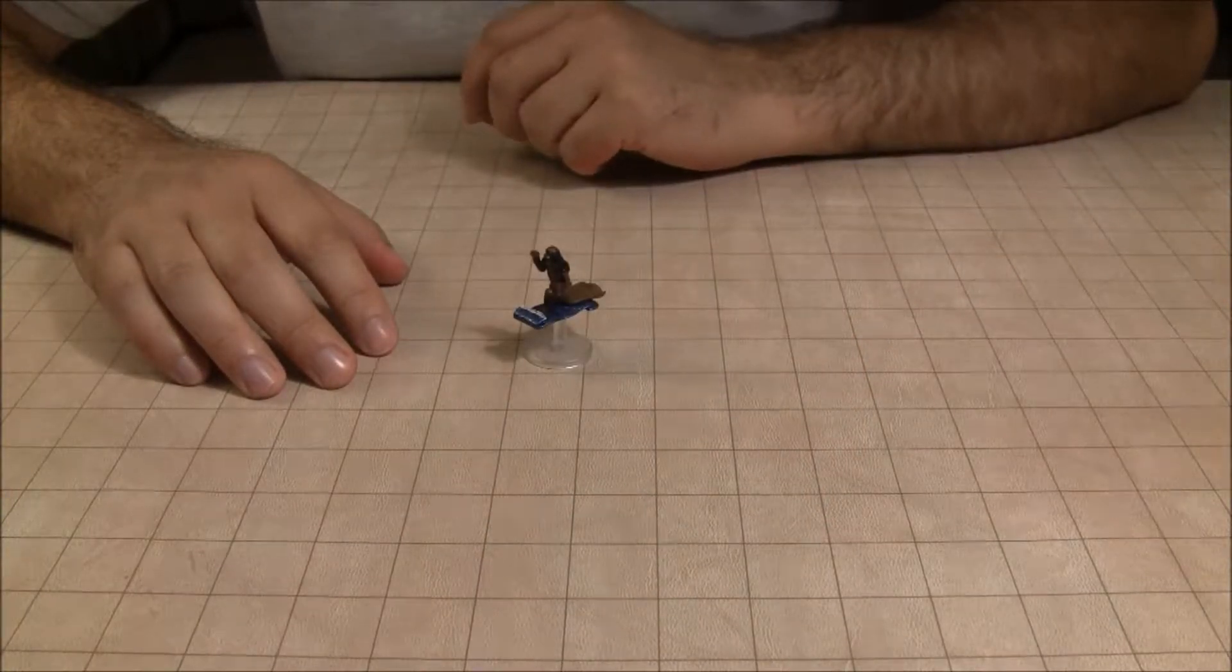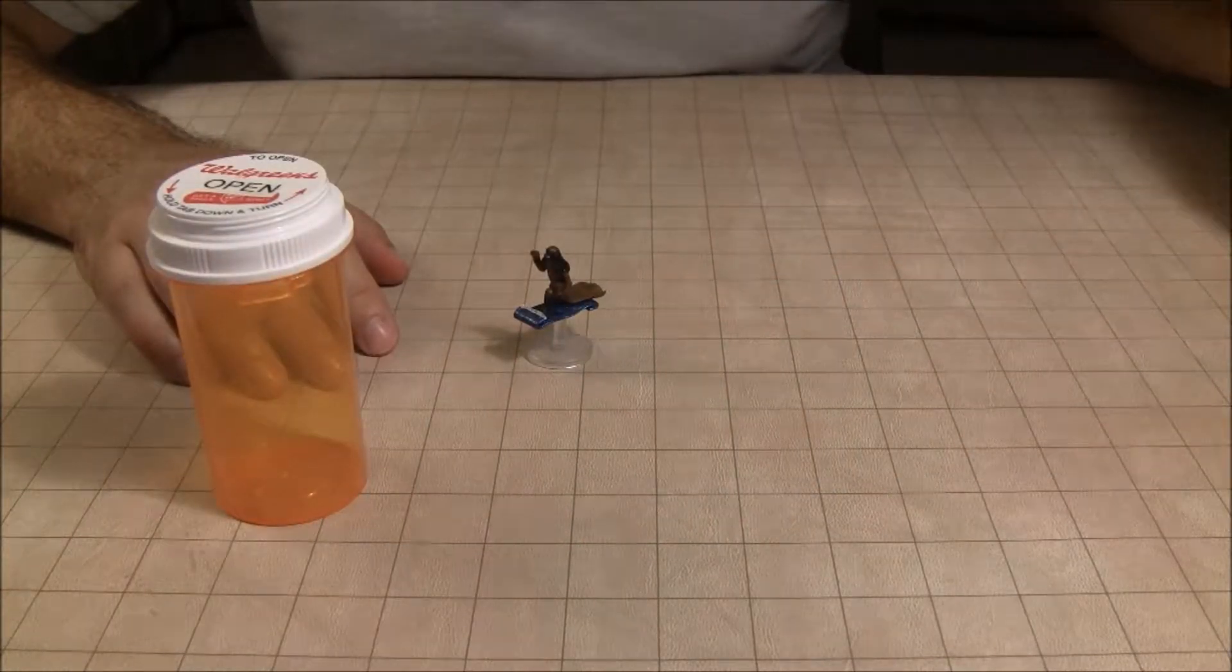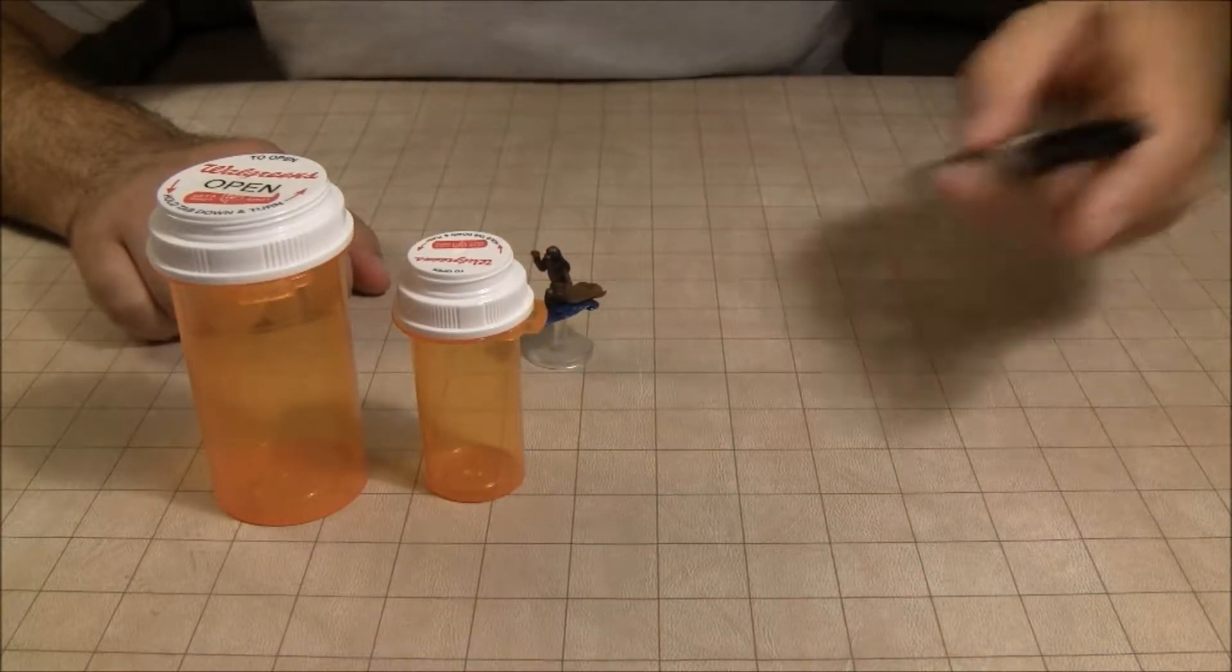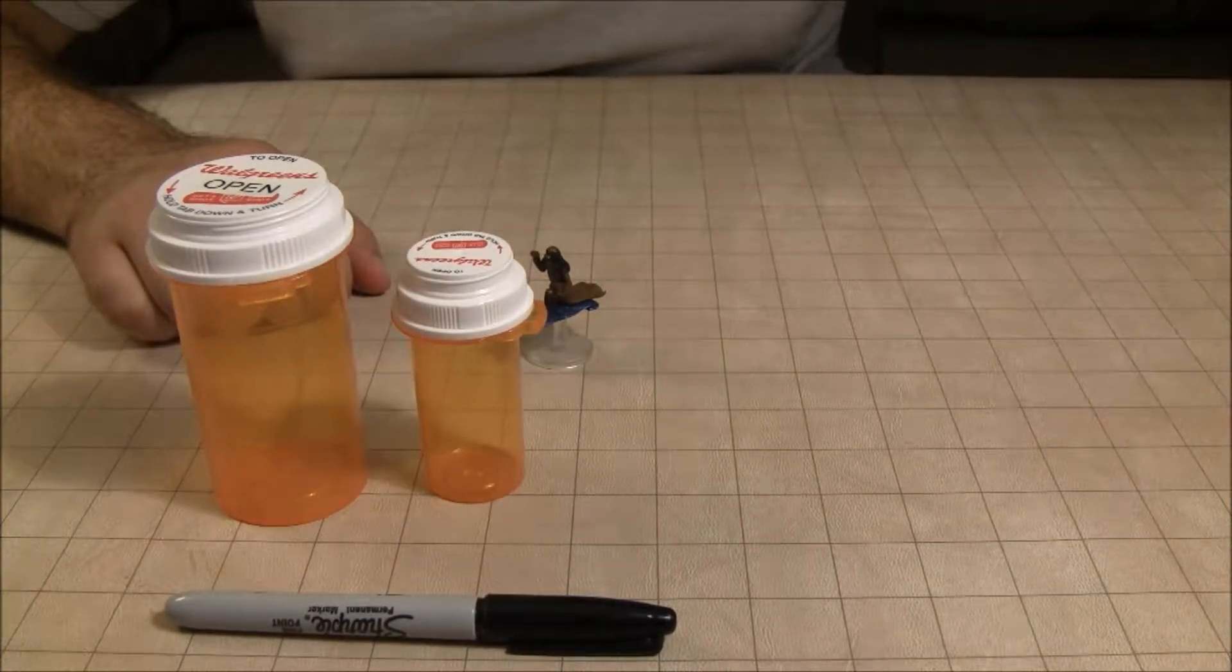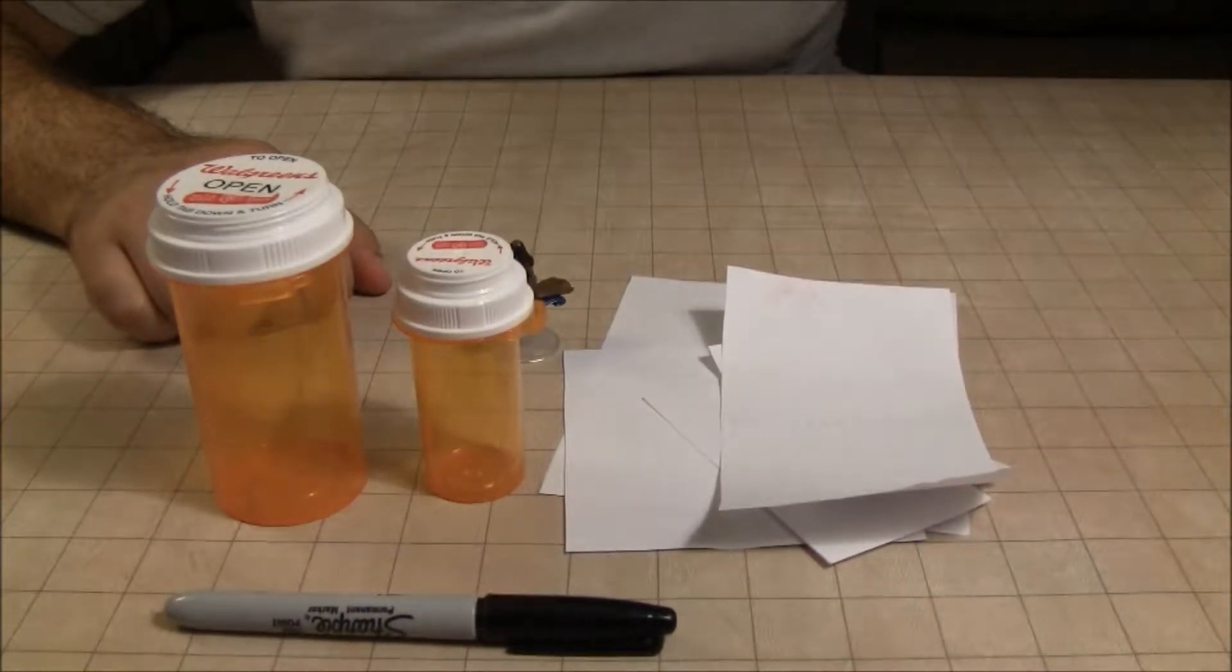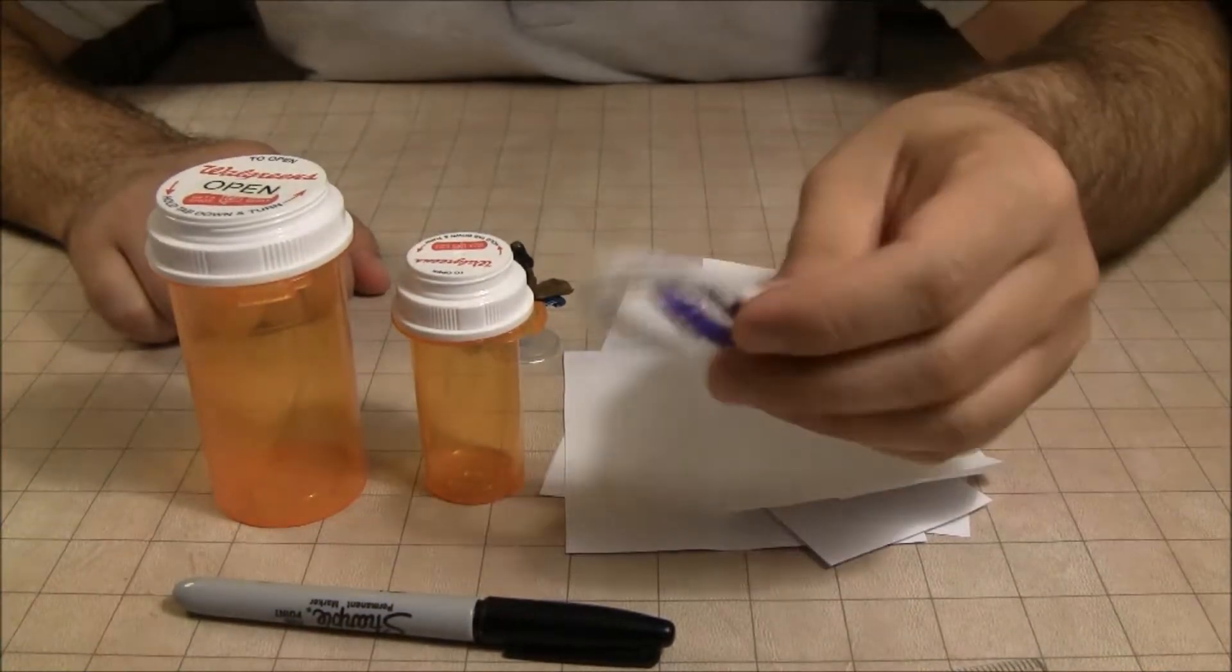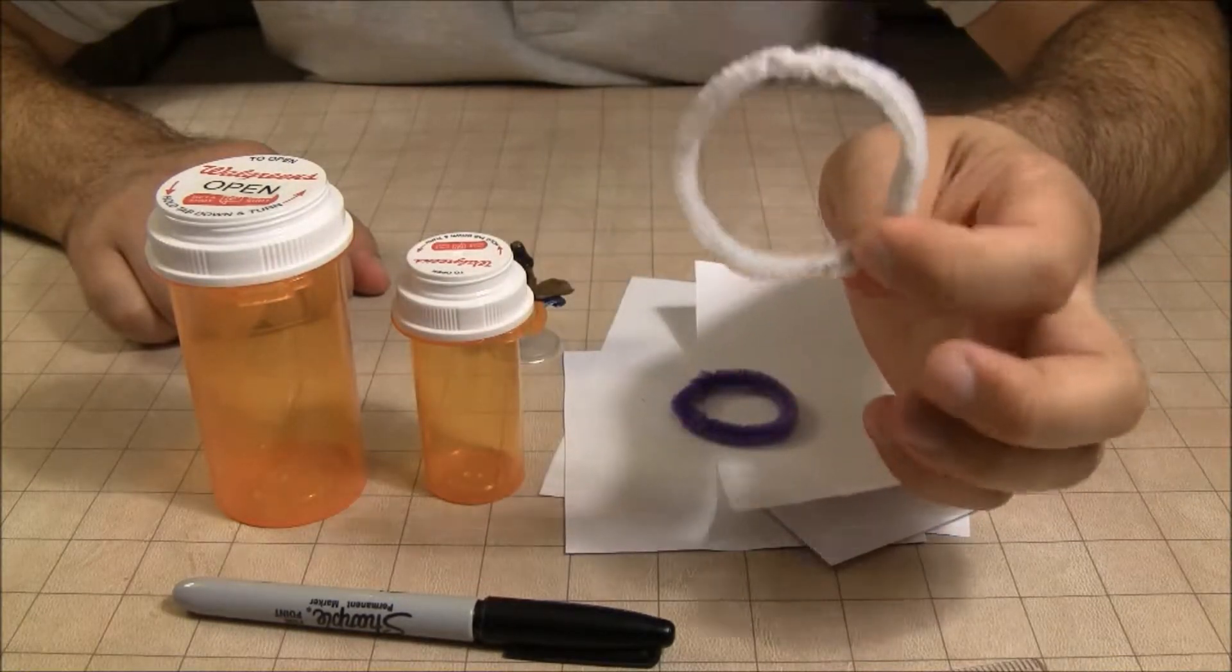So here's what we're going to need. We're going to need pill bottles that are empty and clean, a magic marker, some scraps of paper, a ruler, and either rubber bands or pipe cleaners.